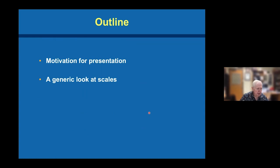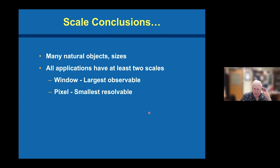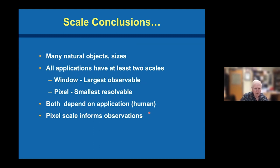Let me move on to a generic look at scales. In nature there are many natural objects and many sizes. But all applications have at least two scales: the window scale — the largest observable thing, usually the size of the frame — and the pixel scale, the smallest resolvable feature in the picture. Both of those scales are human scales; the notion of scale is an imposed thing by humans. The pixel scale informs the larger scales, and that process — going from small scale to large scale — is what's broadly known as scale-up.